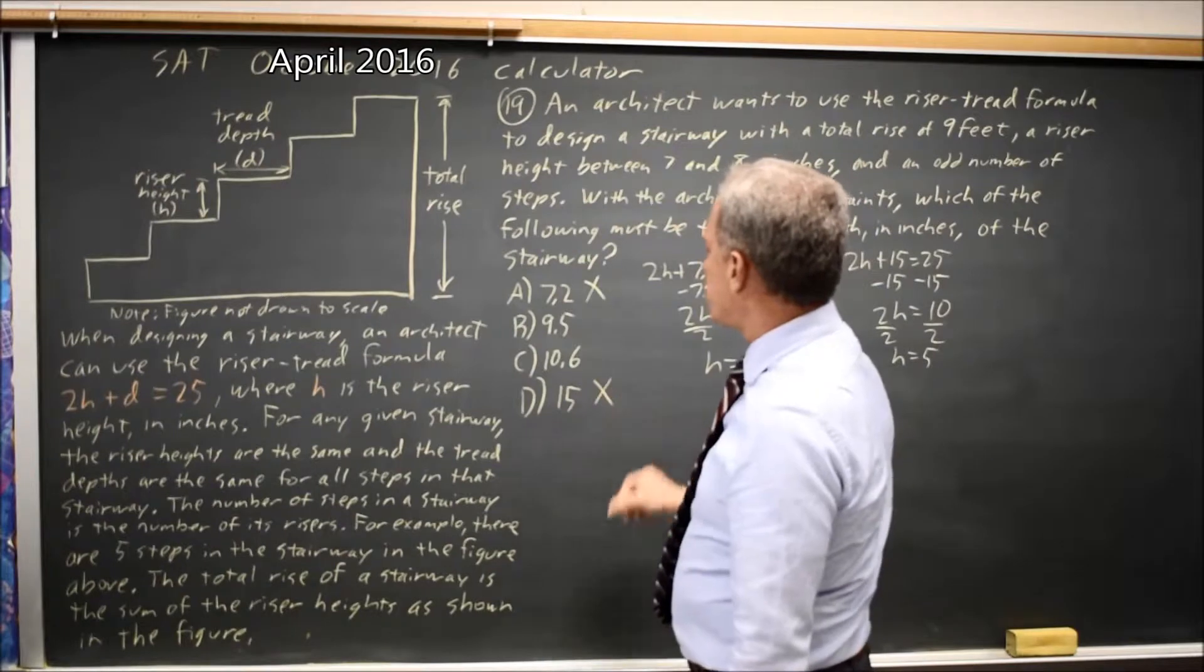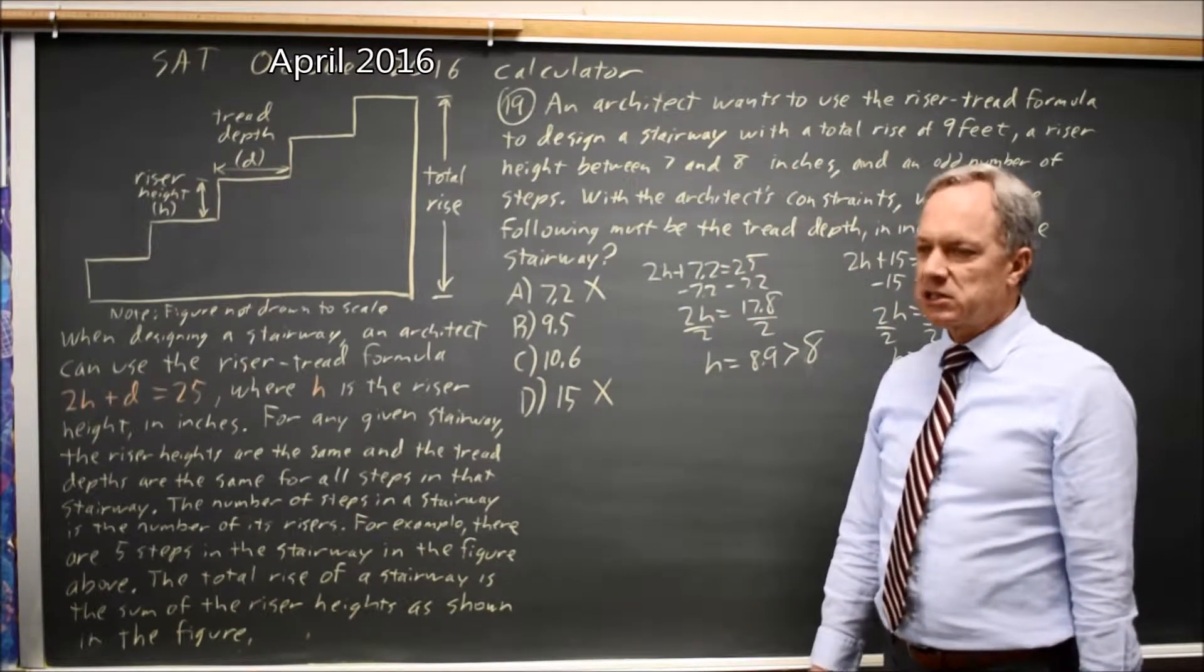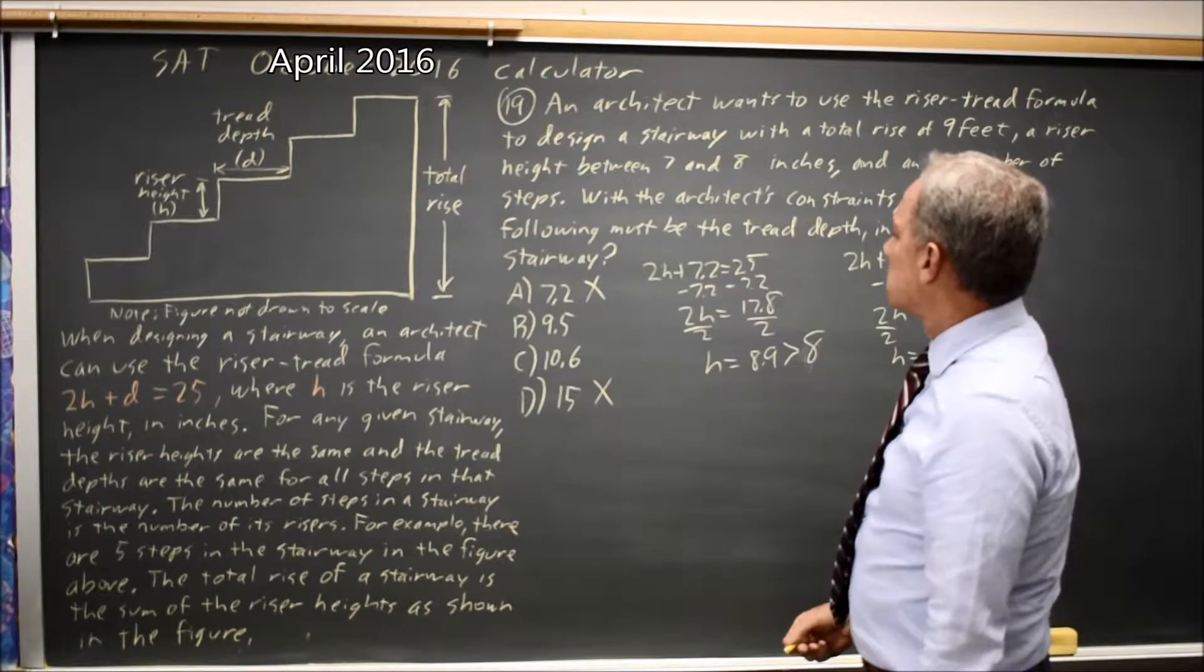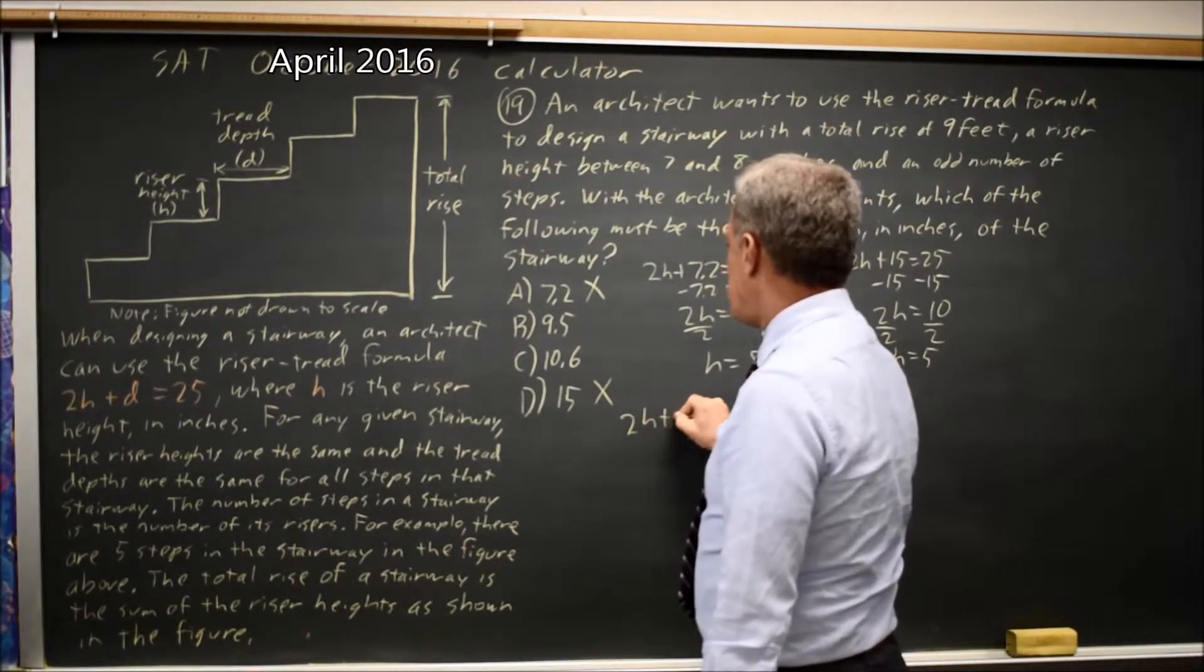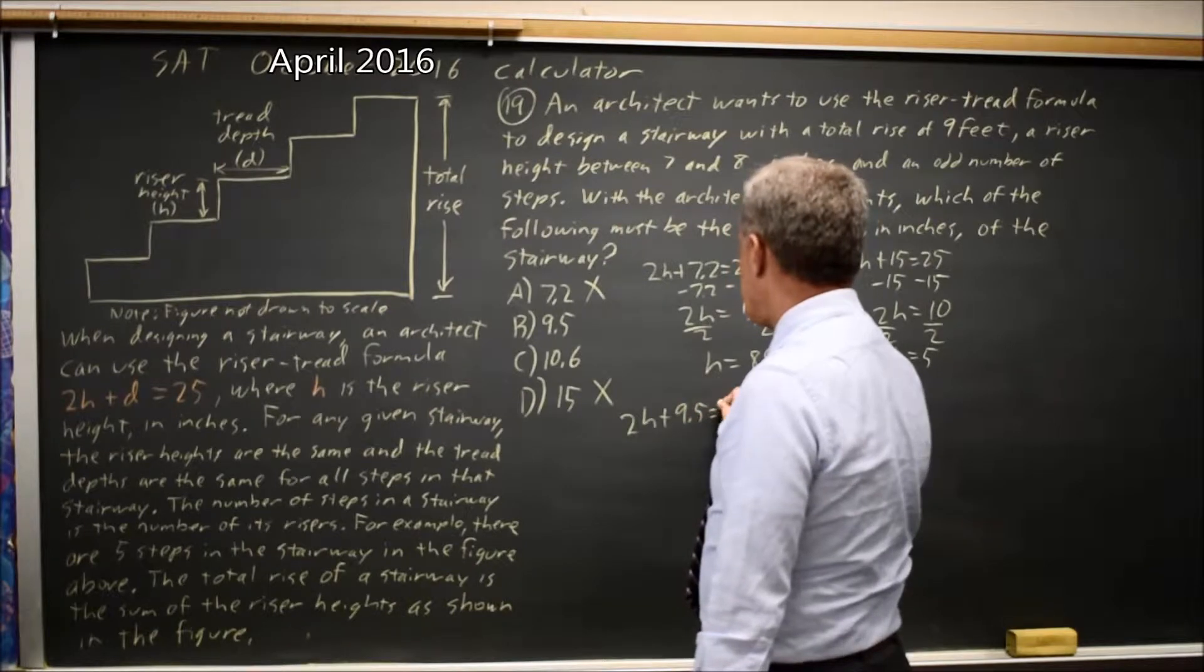So choice D, 15, does not work for the architect's constraints. 2H plus 9.5 equals 25.